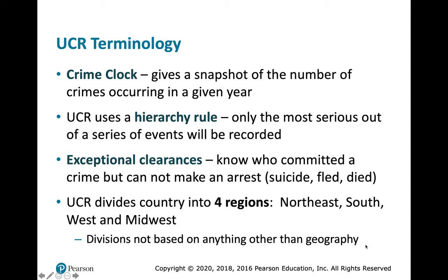The UCR also uses what's called a hierarchy rule: when several offenses occur at once, only the most serious event in a series is recorded. For example, if someone trespasses onto campus, breaks a door, enters a classroom, punches someone in the face, and then steals something from them — only the aggravated assault would be recorded.